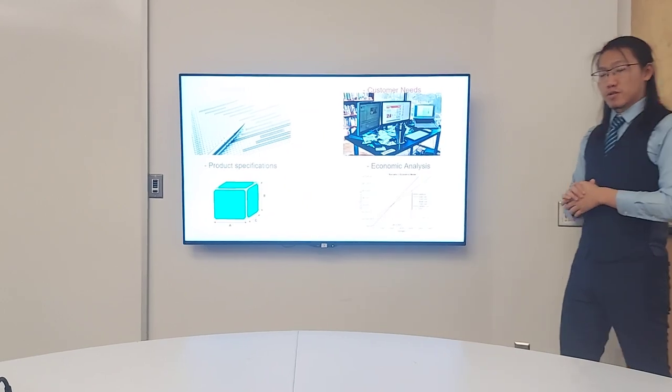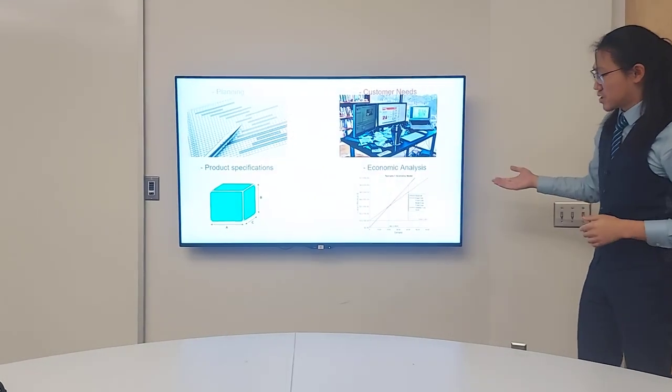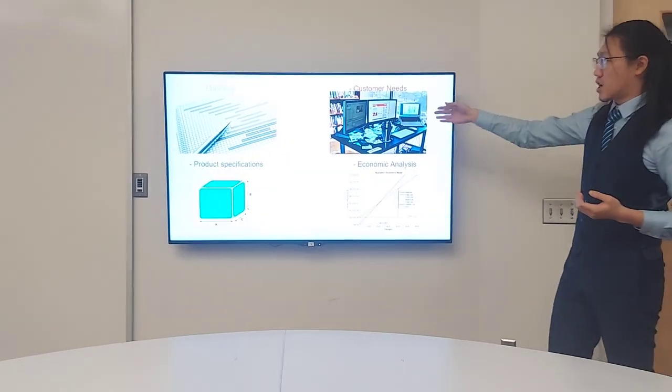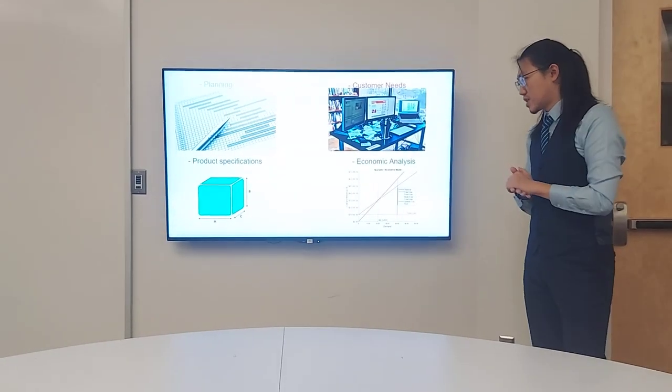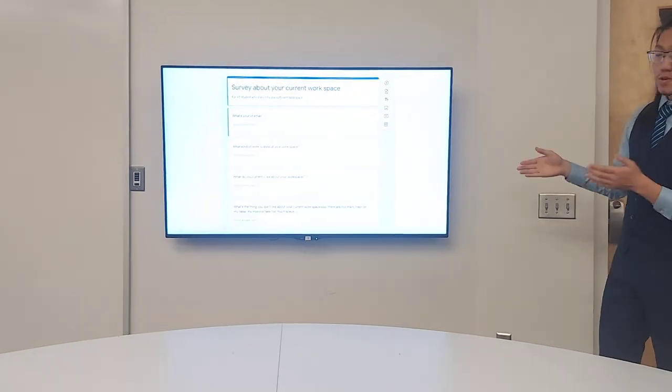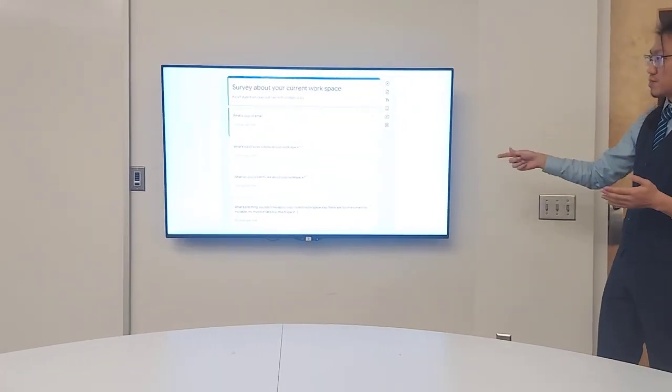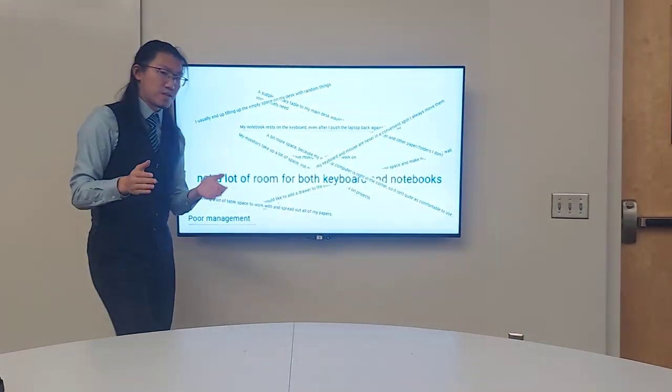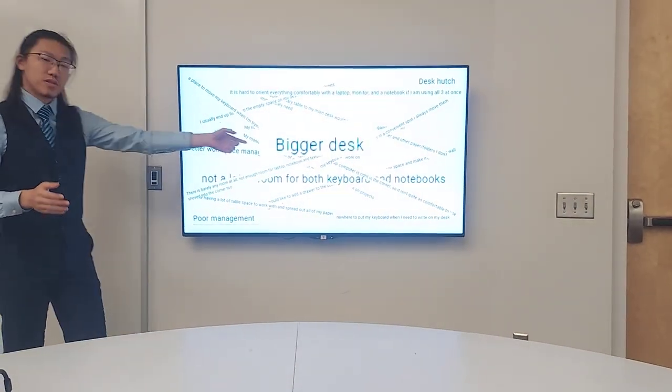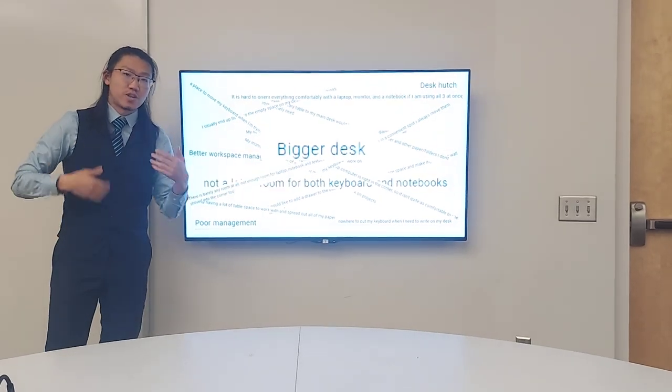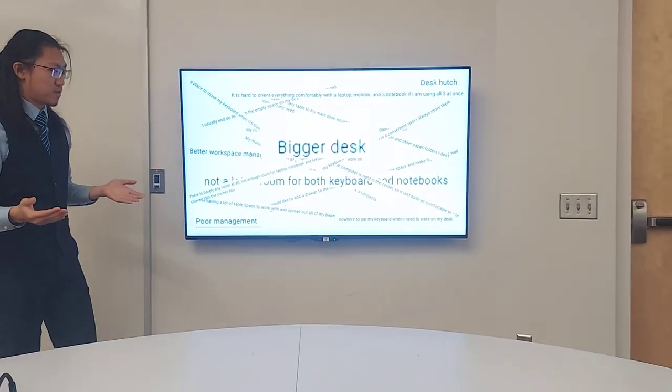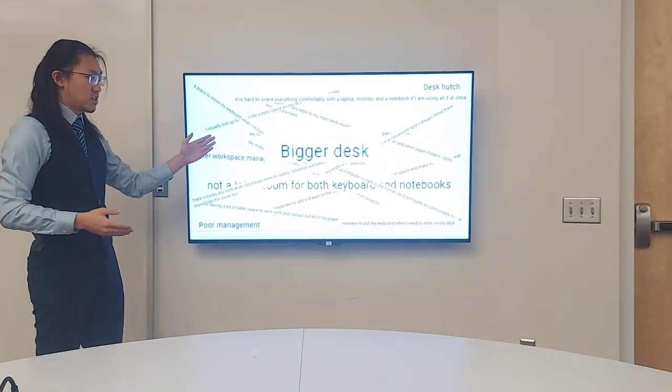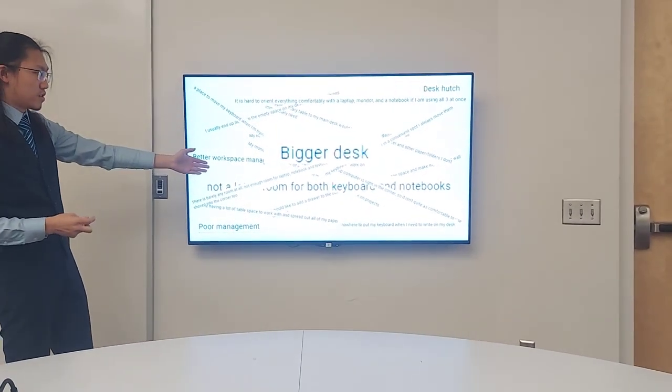Enough of our imaginary users. Let's focus on the real world problem. We asked real customers. Basically, we put up a survey and asked a bunch of people, and we got a bunch of results. Not all of them were good for us to use. For example, this one here saying 'bigger desk' - we cannot really interpret anything from it. So after filtering the results, we put them nicely into this table here.